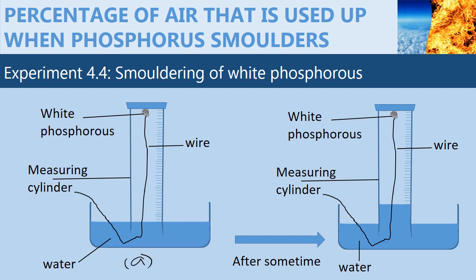At the end of the experiment, after white phosphorus is smoldered in air, the level of water rises up to a certain level. Just like in the previous experiments, this setup can be used to determine what percentage of air was used up.